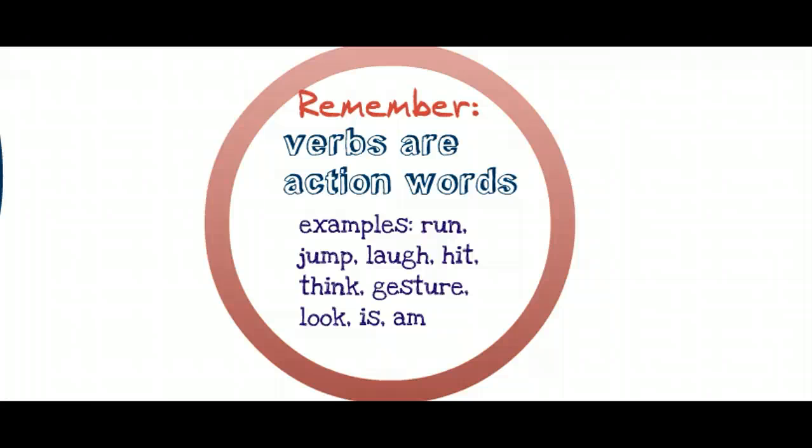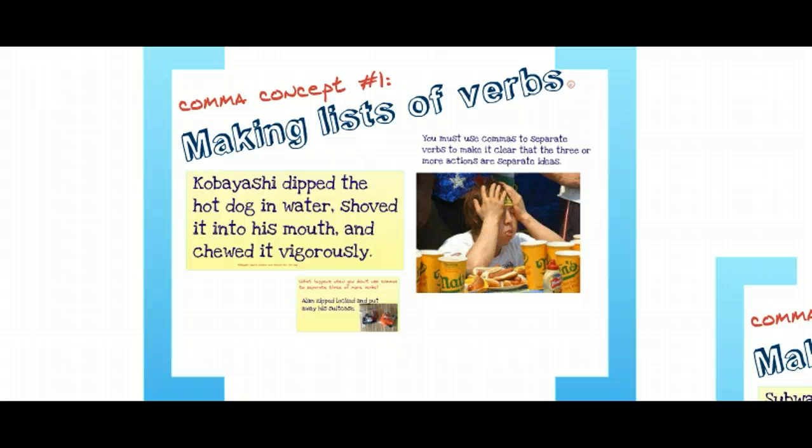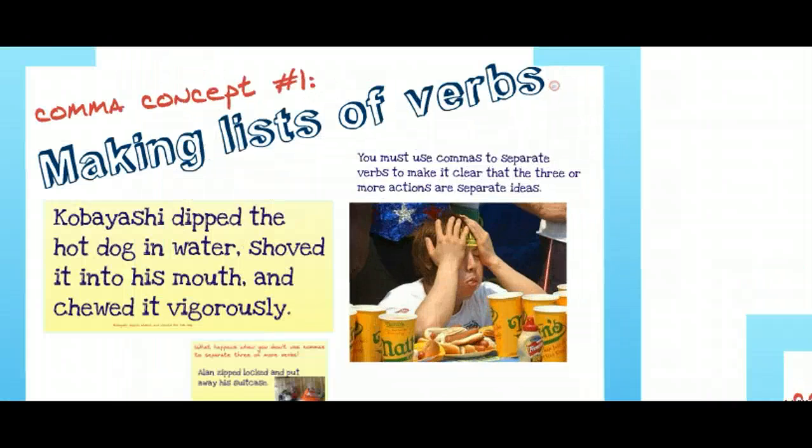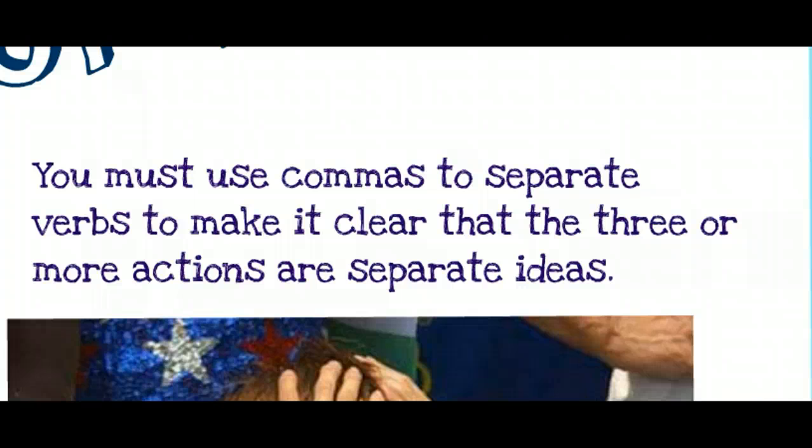A few years back, there was a man from Japan named Kobayashi who was famous for eating — I think it was 53 hot dogs in under 15 minutes. He was crazy and he dominated eating contests all over the country. Here's the rule we're going to look at before we talk about Kobayashi: you must use commas to separate verbs to make it clear that three or more actions are separate ideas. We're using commas to separate ideas, this time specifically about actions.